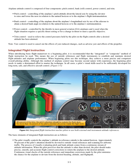Airplane attitude control is composed of four components: pitch control, bank (roll) control, power control, and trim. Pitch control is the controlling of the airplane's pitch attitude about the lateral axis by using the elevator to raise and lower the nose in relation to the natural horizon or flight instrumentation. Bank control is the controlling of the airplane about the longitudinal axis by use of the ailerons to attain a desired bank angle. Power control is controlled by the throttle in most general aviation (GA) airplanes and is used when the flight situation requires a specific thrust setting. Trim control is used to relieve control pressures held by the pilot on the flight controls after a desired attitude has been attained. Note: yaw control is used to cancel out the effects of yaw-induced changes, such as adverse yaw and effects of the propeller.